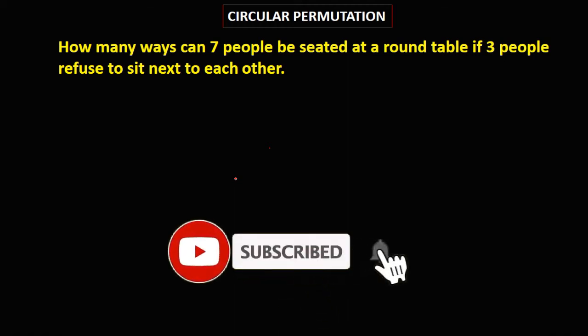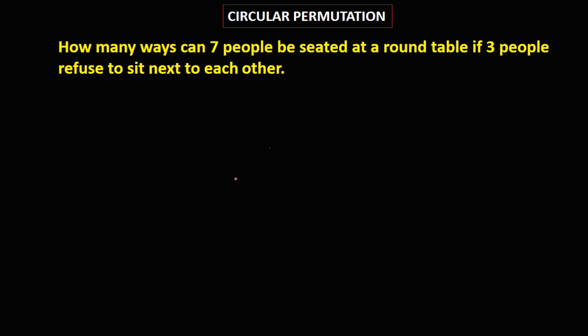Okay, so let's have this problem. How many ways can 7 people be seated at a round table if 3 people refuse to sit next to each other?